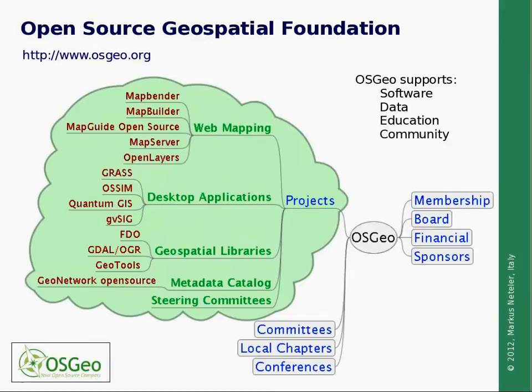How does the landscape of the Open Source Geospatial Foundation look like? In the first place, there are different projects which are related to web mapping, desktop applications, geospatial libraries, metadata, and catalogs. All of them have steering committees to organize the related communities.